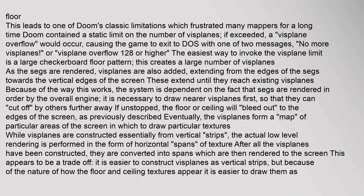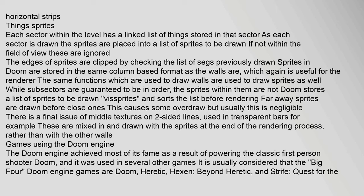The easiest way to invoke the visplane limit is a large checkerboard floor pattern, which creates a large number of visplanes. As segs are rendered, visplanes are extended from the edges of the segs toward the vertical edges of the screen until they reach existing visplanes. It is necessary to draw nearer visplanes first so they can be cut off by others further away. Eventually the visplanes form a map of particular areas of the screen in which to draw particular textures. While visplanes are constructed essentially from vertical strips, the actual low-level rendering is performed as horizontal spans of texture.